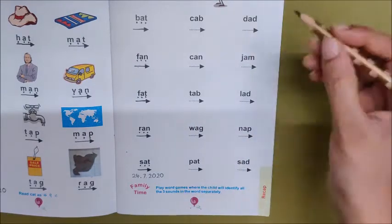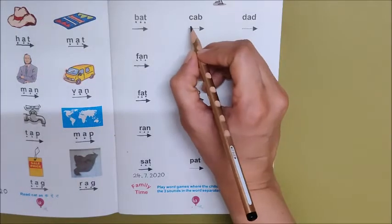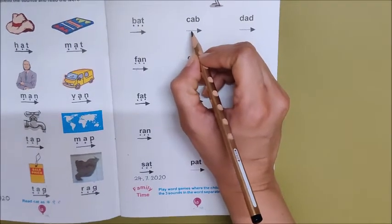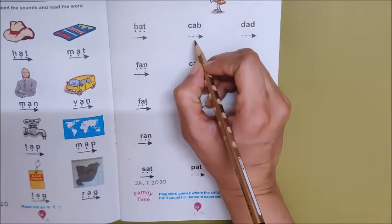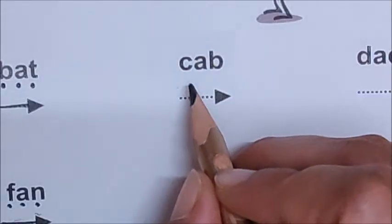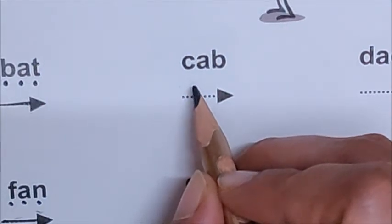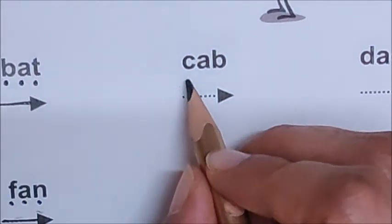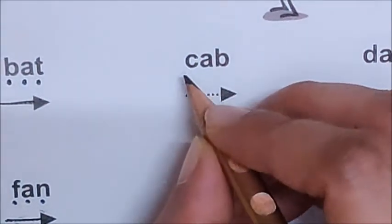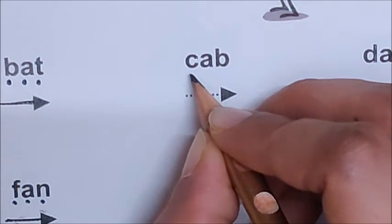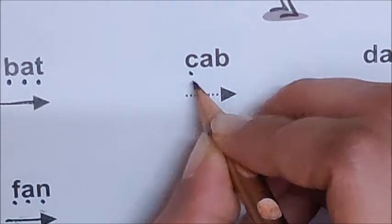Take your pencil in the hand and let us begin to read the first word. What is the first sound here, children? K. K is the first sound. So put one dot for K.